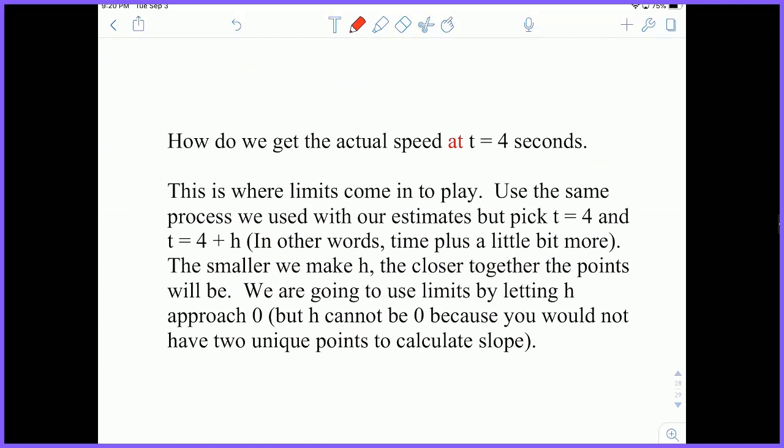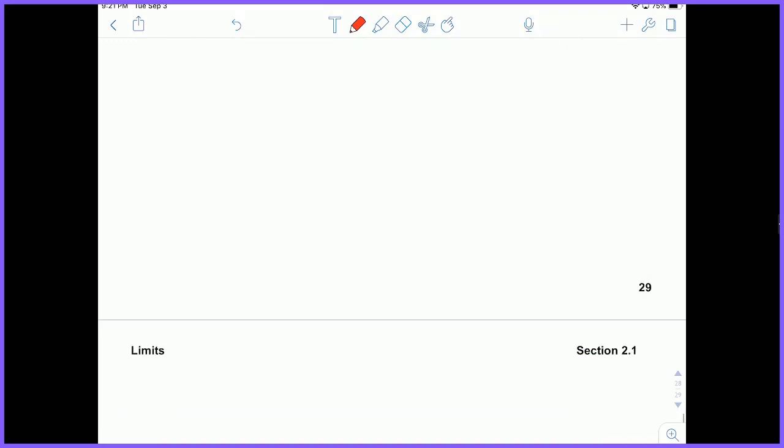And to do this, we're going to use limits. So to find the value at 4, the actual speed at 4, we're going to call the second value 4 plus h. And what we want to do is essentially have the limit as h approaches 0. We want it to be extremely, extremely close to 0. So let's go ahead and try that. So if we want this, we want my first x value to be 4 and my second x value to be 4 plus h.